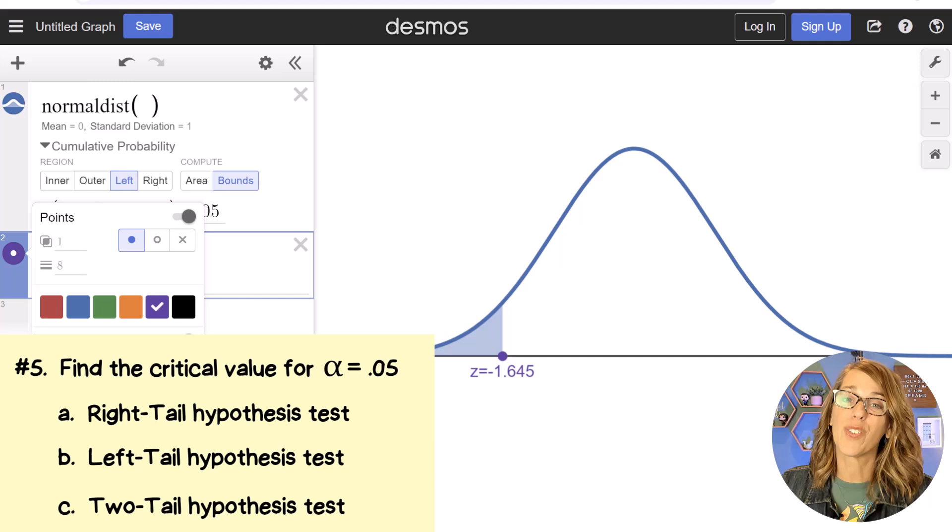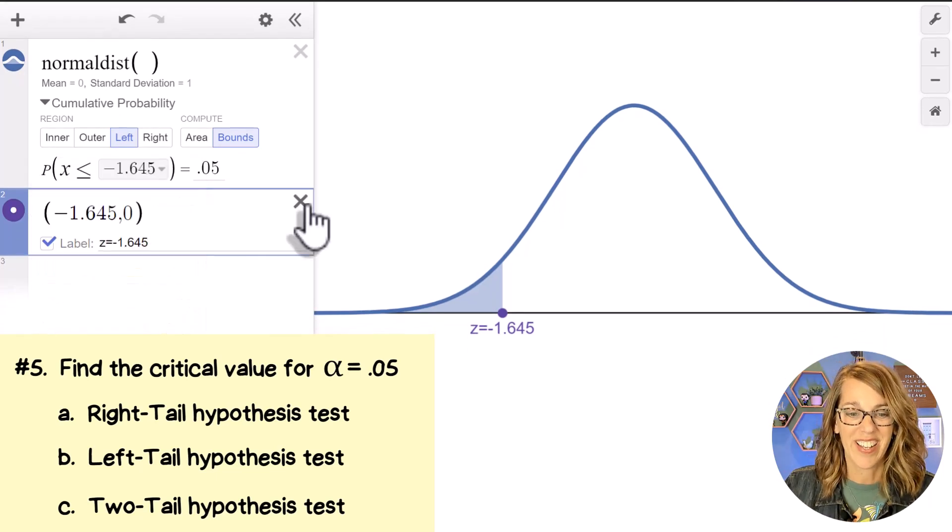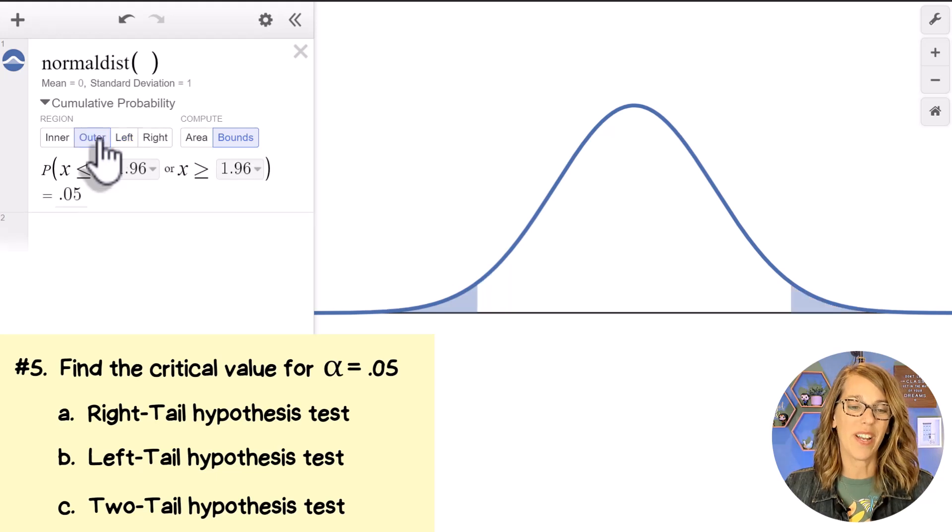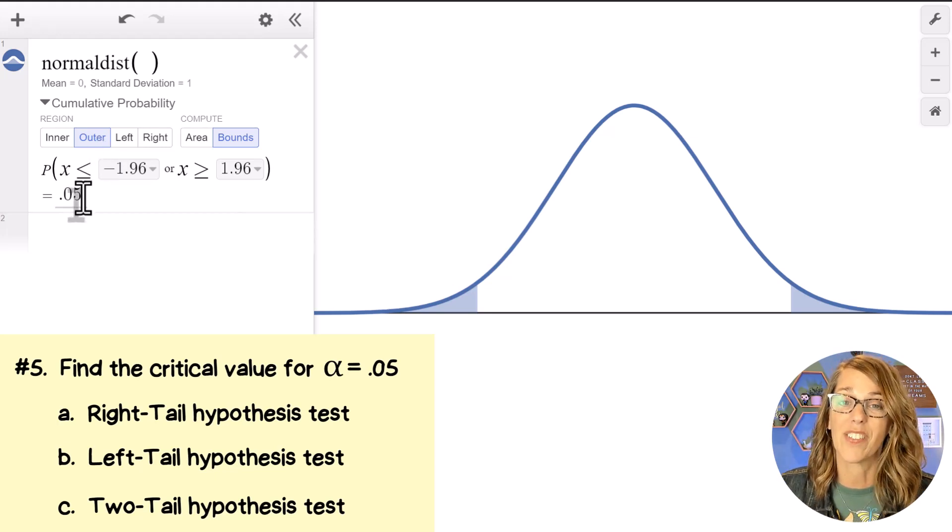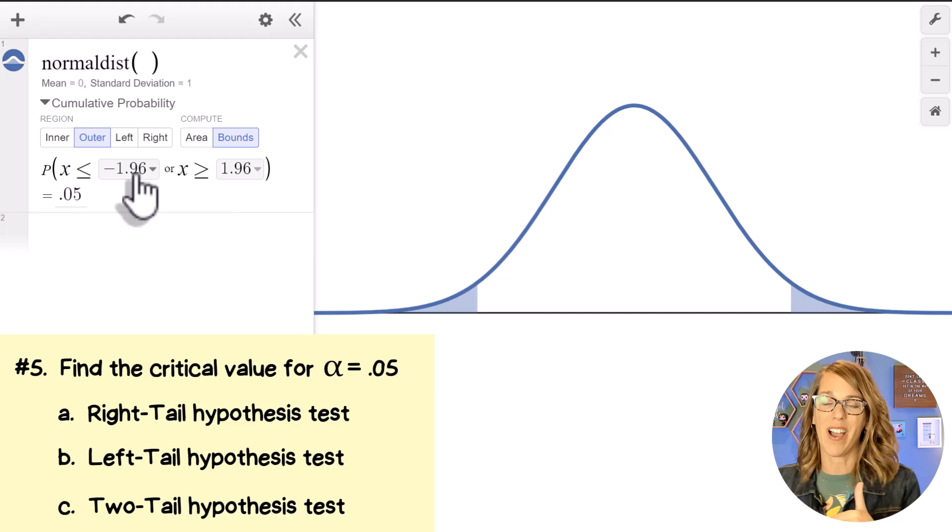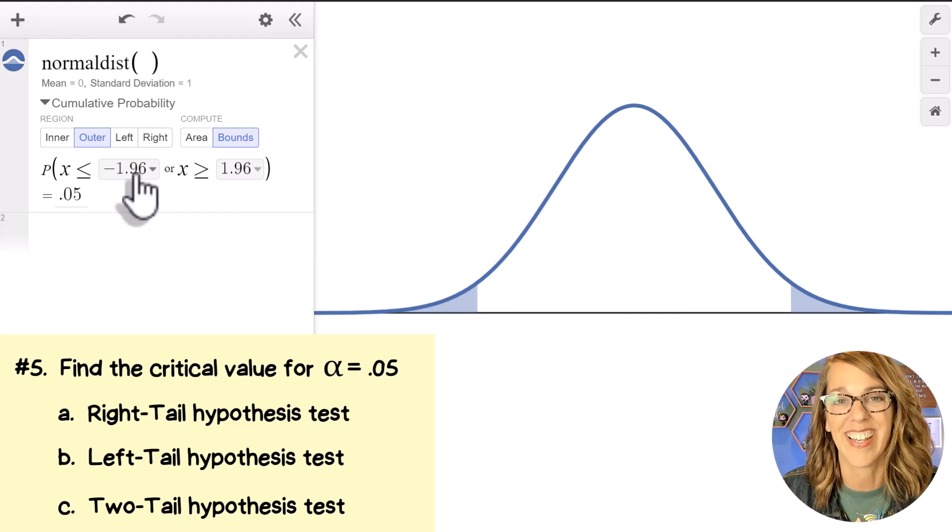I've got one more and that's for a two tail hypothesis test. So let's x here and for a two tail I want it to be on the outer. Notice how it split that area now into two and I've got that same alpha that same area in the tails of 0.05 just split and I've got values of negative 1.96 and positive 1.96. I'd love to know what you think about normal curves and desmos. I've got more for you here.